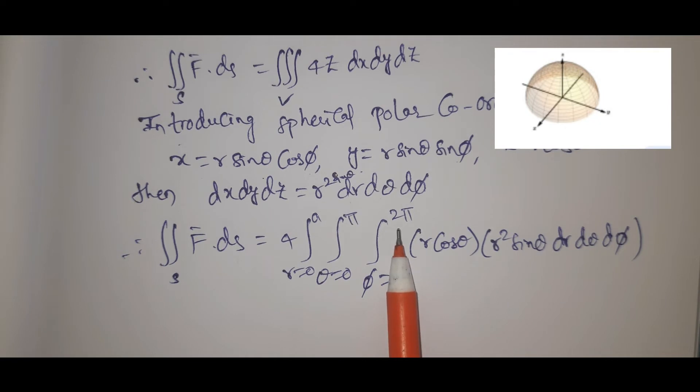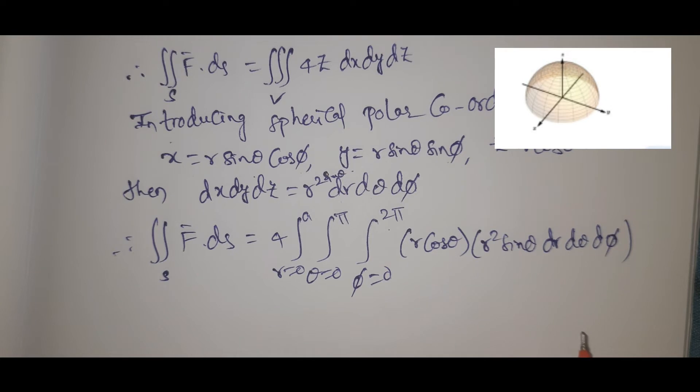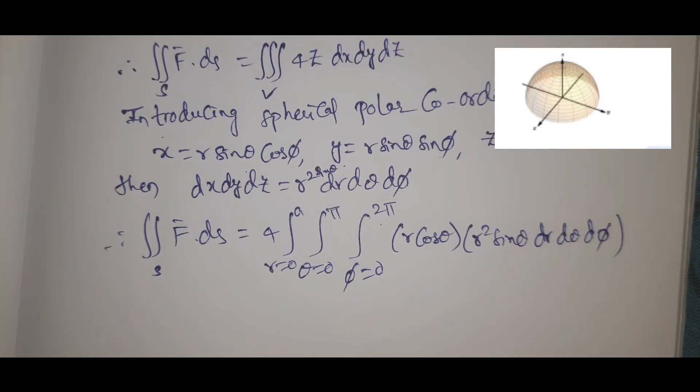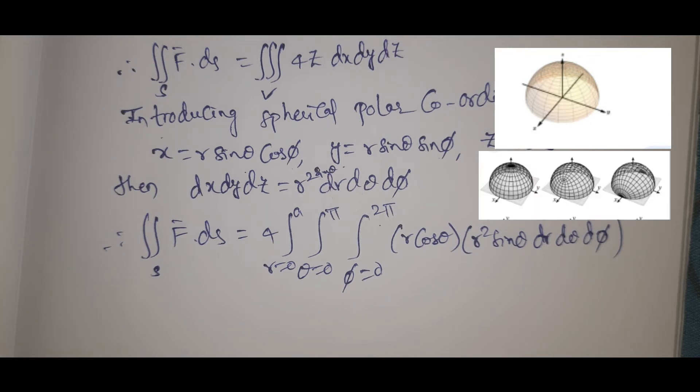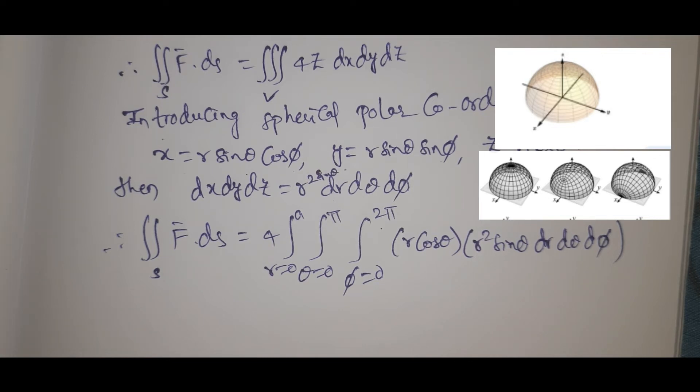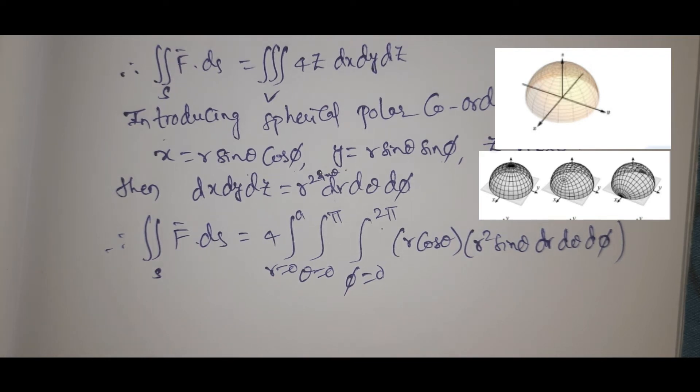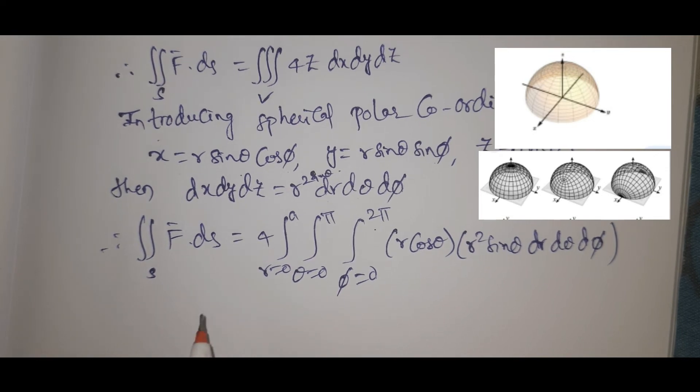I'm going to show you the limits here from the figure. The whole circle will be 0 to 2π for phi. Now for the upper half of the sphere, theta equals 0 to π. Then the radius r equals 0 to a.